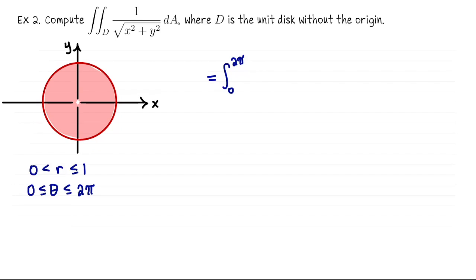I'll put theta on the outside, so this is going to go from 0 to 2π, integral from 0 to 1. And then our integrand was 1 divided by √(x² + y²). In polar coordinates, x² + y² is r². r here is non-negative, so the √(r²) is just r. So the integrand is 1/r. And then we replace dA with r dr dθ. Look what happens. The 1/r and the r cancel out, and we're left with the integral from 0 to 2π, integral from 0 to 1, of just 1 dr dθ.